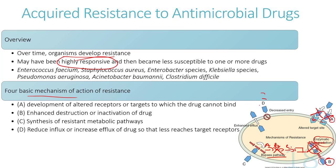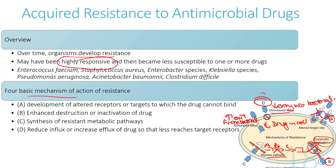Mechanism D involves either decreased entry of the drug into the bacterial cell or increased exit from the bacterial cell. In either case, there is less drug inside the cell, making it less effective. These are the four strategies bacteria have developed to resist the action of drugs.